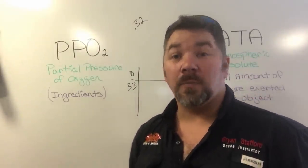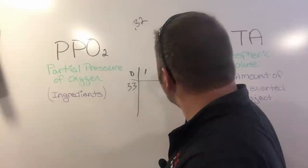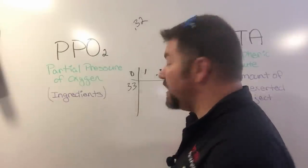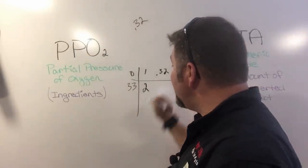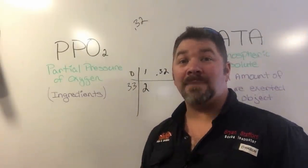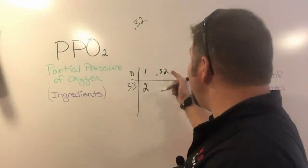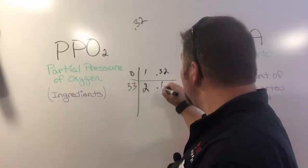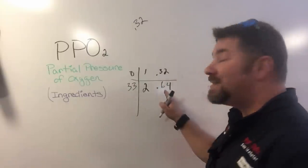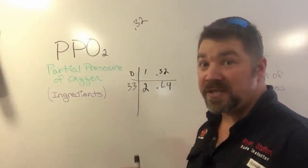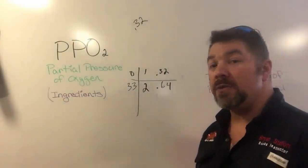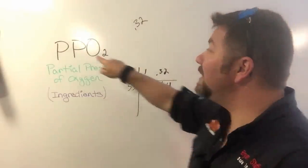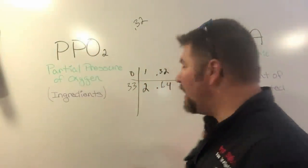Anytime we deal with atmospheric absolute and partial pressure of a given gas, we need to multiply by whatever atmosphere pressure we're at. Here at the surface, I'm breathing 32 percent. If I go to a depth of 33 feet, then I'm going to have two times the amount of effect of that partial pressure. At 33 feet, it's the equivalent to breathing 64 percent nitrox up here at the surface.